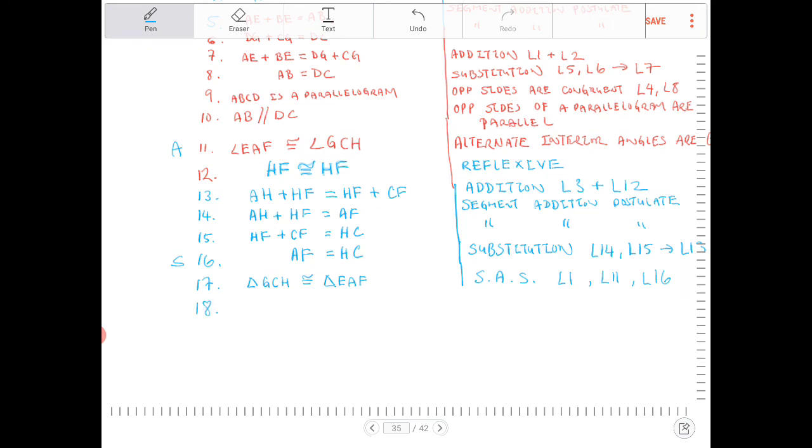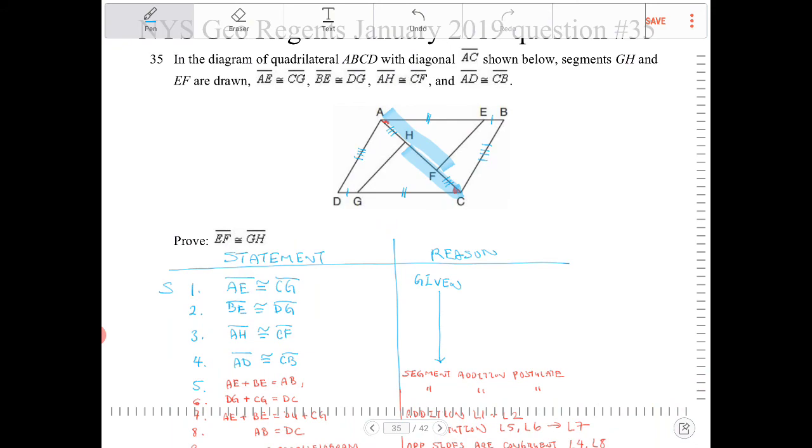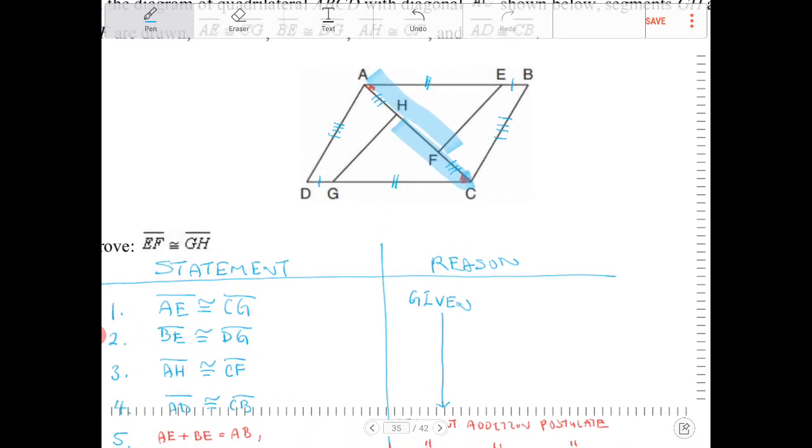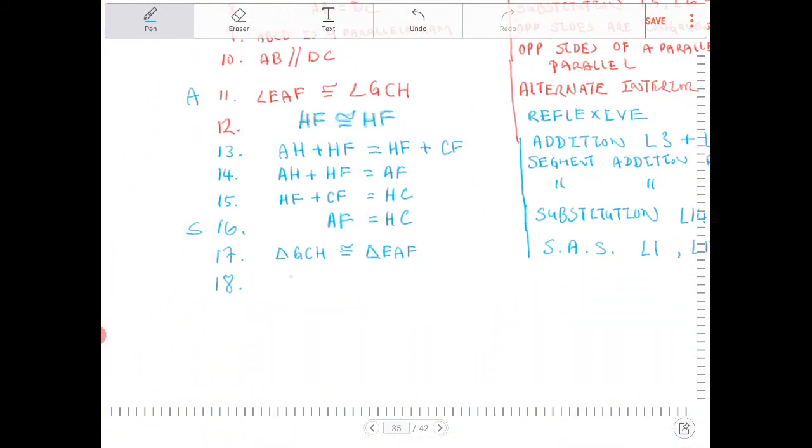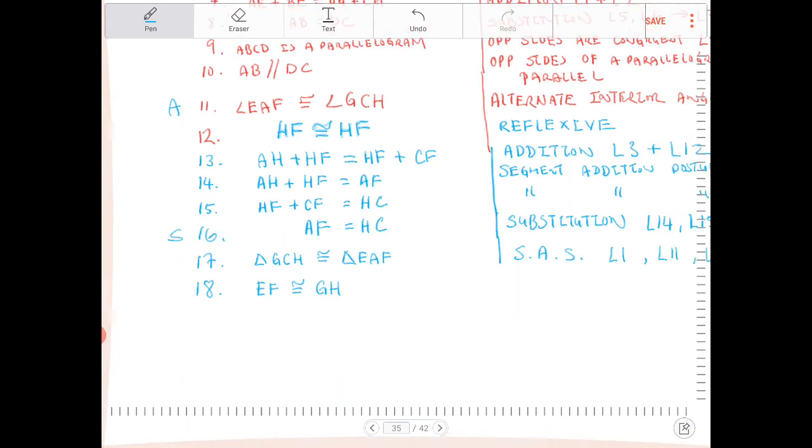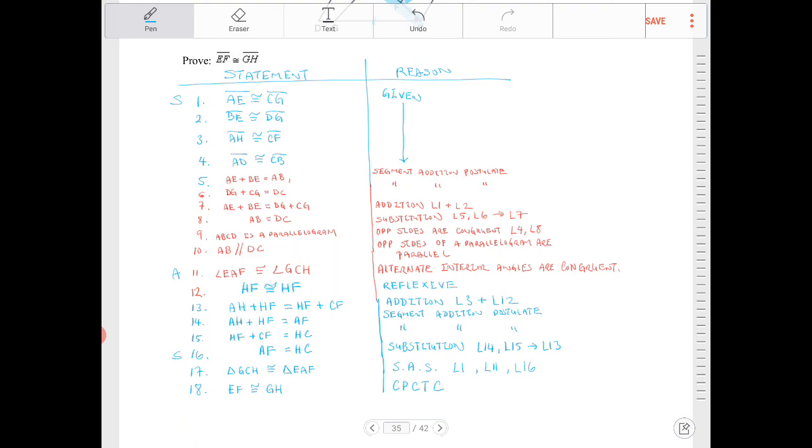And then finally, finally, we have what we were set out to prove, which was EF congruent to GH. So EF is congruent to GH because of CPCTC, corresponding parts of congruent triangles are congruent. So there it is again in its entirety.